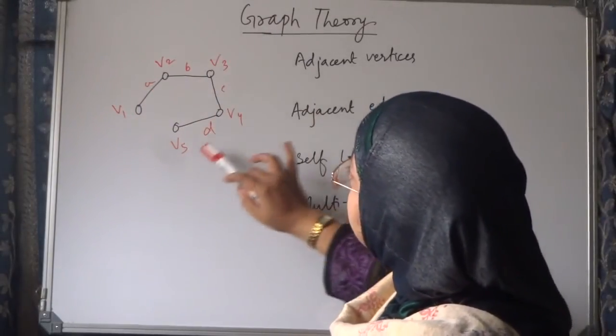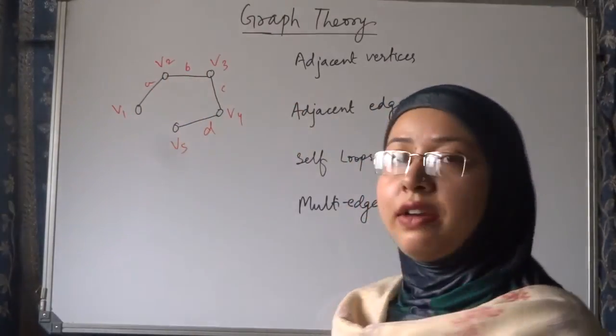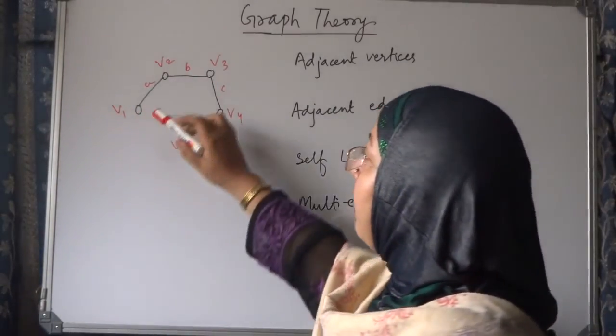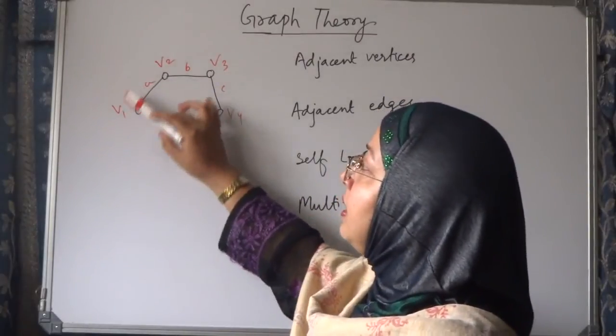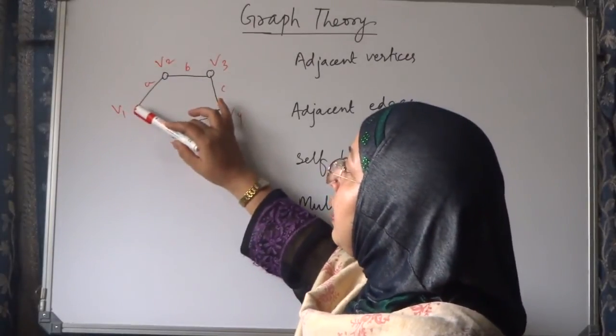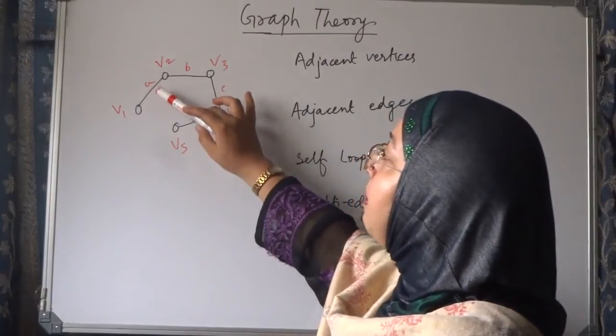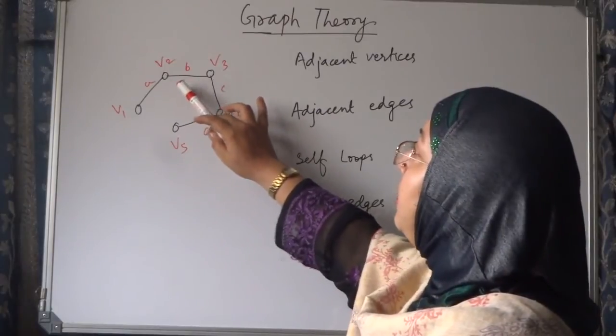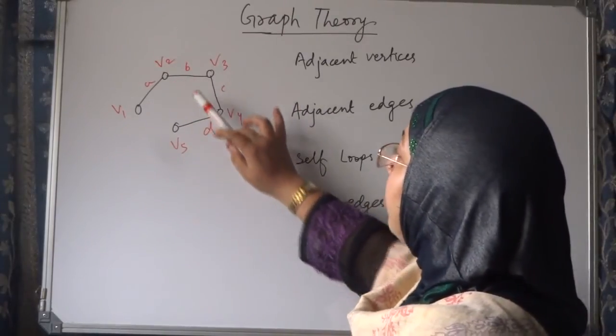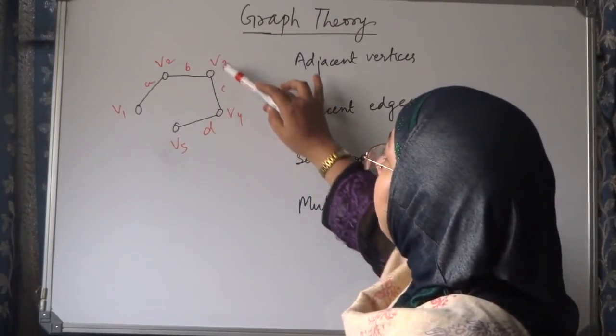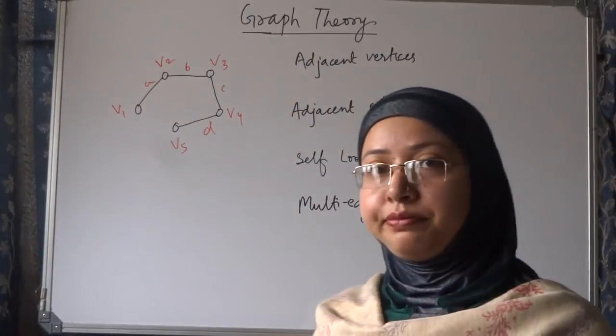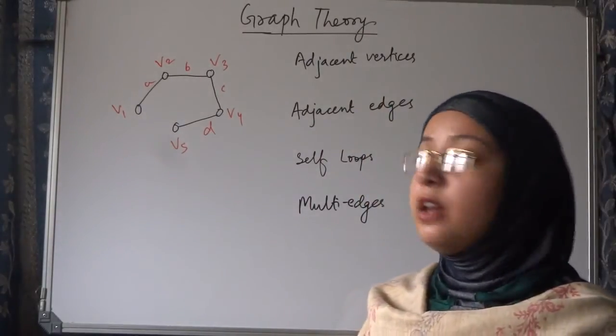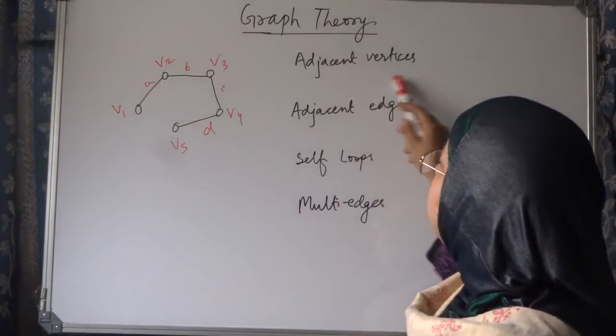Here, what are the vertices? v1, v2, v3, v4, v5 are vertices and a, b, c, d are edges. So, if we want to know what are the vertices which are connected by the edge a, we can say that v1 and v2. For b, v2 and v3. For c, v3 and v4. For d, v4 and v5. So, here are some terminologies we use generally in graph theory.